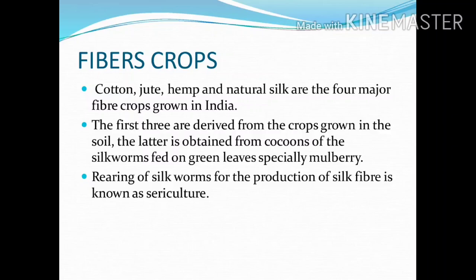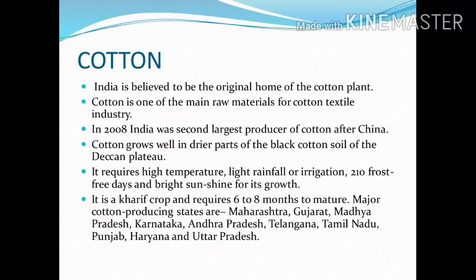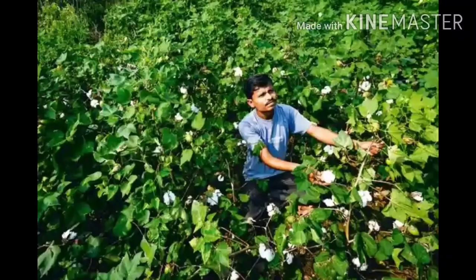Cotton: India is believed to be the original homeland of the cotton plant. Cotton is one of the main raw materials for the cotton textile industry. Cotton grows well in the drier parts of the black cotton soil of the Deccan plateau. India is the second largest producer of cotton after China. It requires high temperature, light rainfall or irrigation, 210 frost-free days, and bright sunshine for its growth. It is a Kharif crop and requires 6 to 8 months to mature. Major cotton-producing states are Maharashtra, Gujarat, Madhya Pradesh, Karnataka, Andhra Pradesh, Telangana, Tamil Nadu, Punjab, Haryana, and Uttar Pradesh.